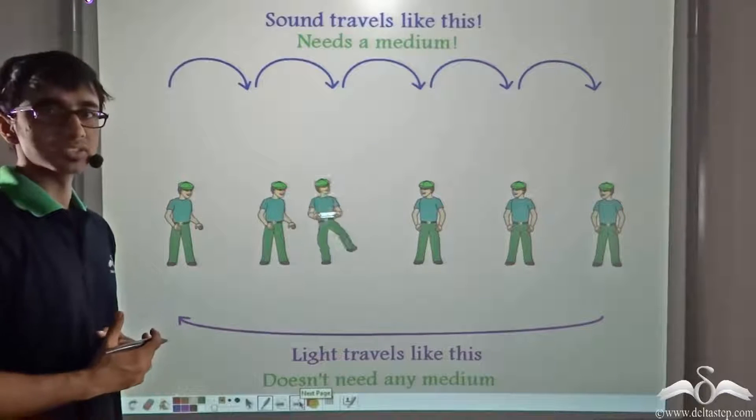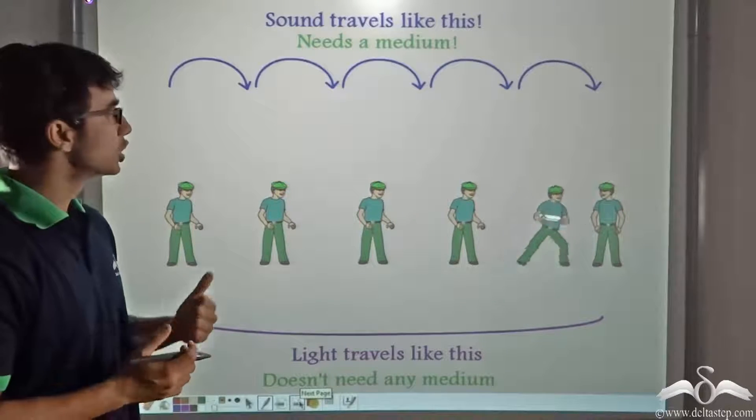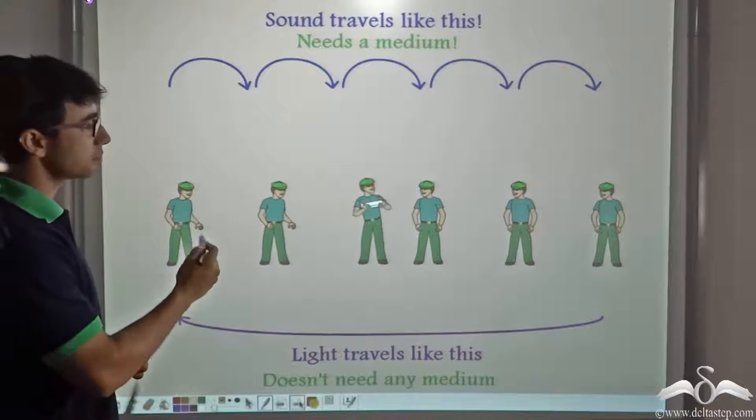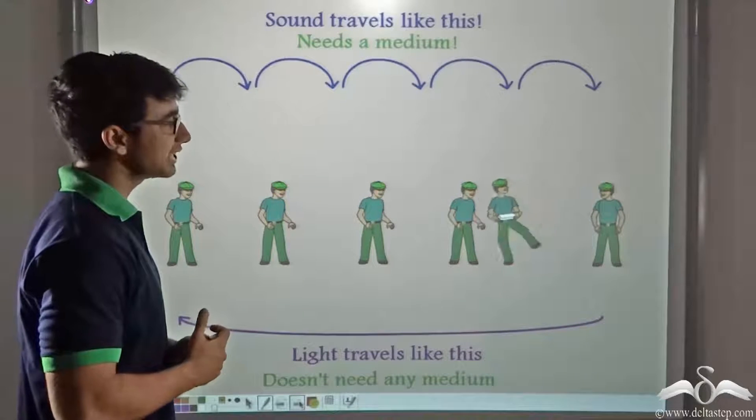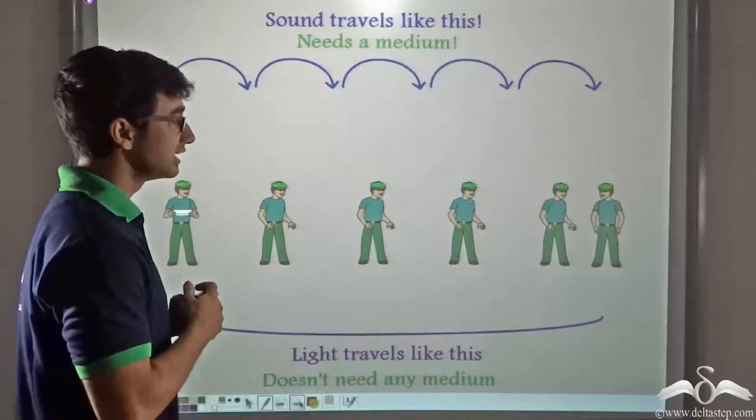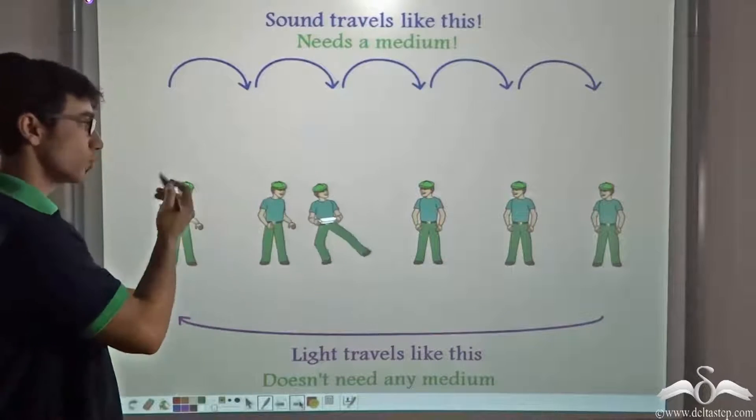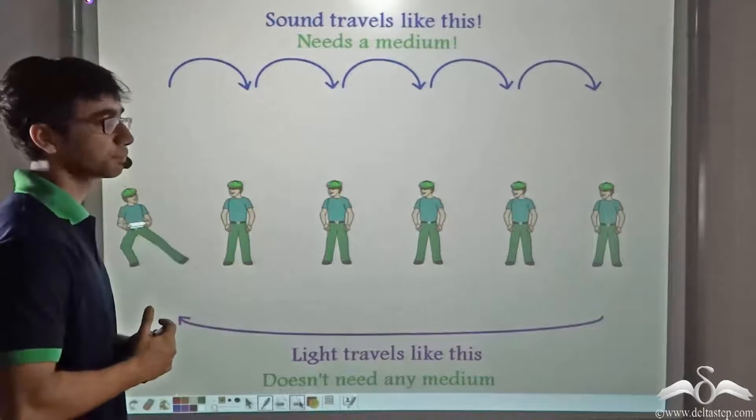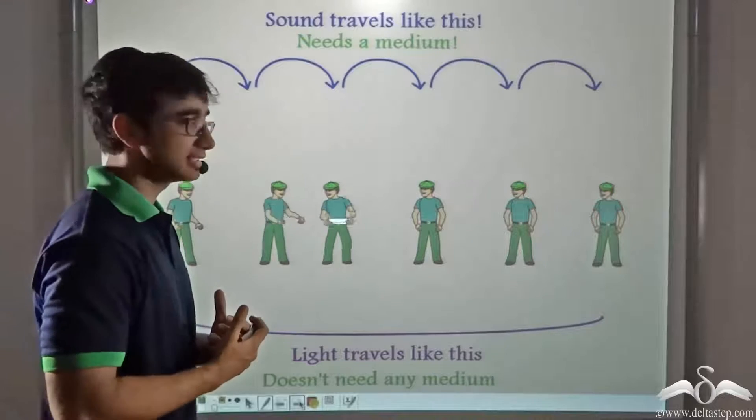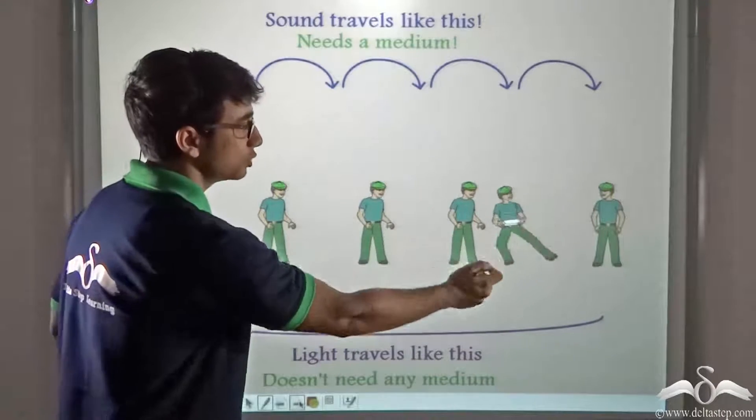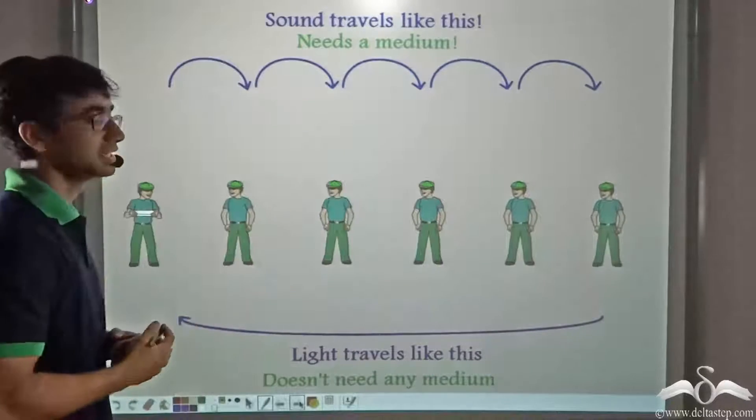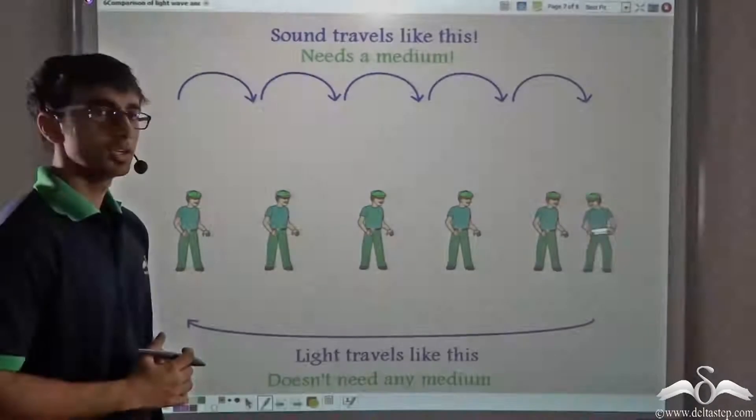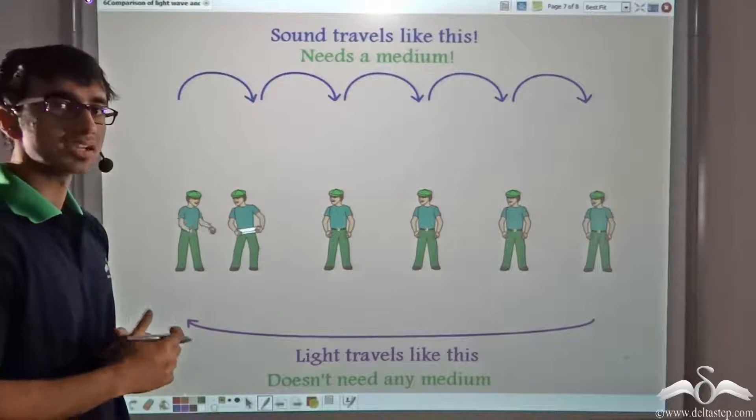So how do you think light travels? Does it need a medium to travel? Observe this animation closely. Over here, as the parcel is being passed from one man to the other, it indicates that sound travels in this manner. It needs the medium particles to travel from one point to the other. Whereas light does not require a medium to travel. This is indicated by the last man in the queue throwing the parcel to the first man. It travels from point to point and it does not need medium particles to travel. So let us compare light waves and sound waves.